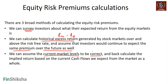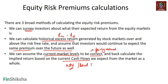In the third method, you back-calculate the implied return based on the current cash flows expected from the markets as a whole. You start with the current market value, look at the cash flows the entire stock market is expected to give you, and find the implied return — effectively discounting cash flows similarly to NPV analysis or bond valuation to calculate the equity risk premium.